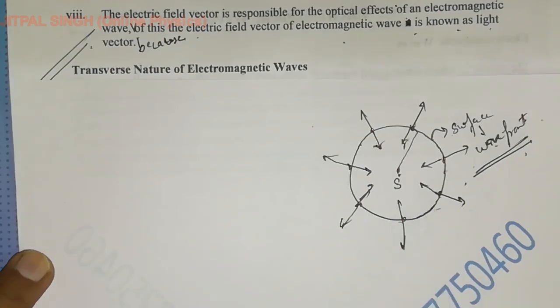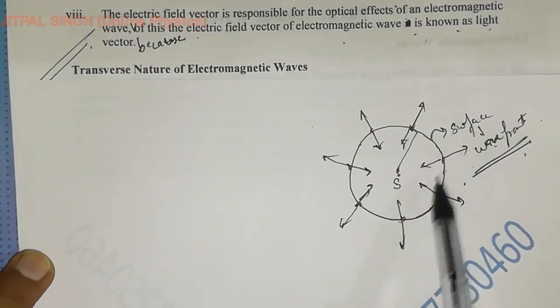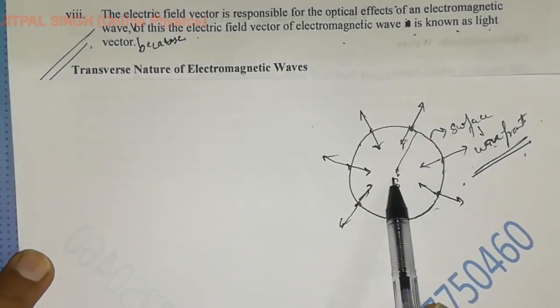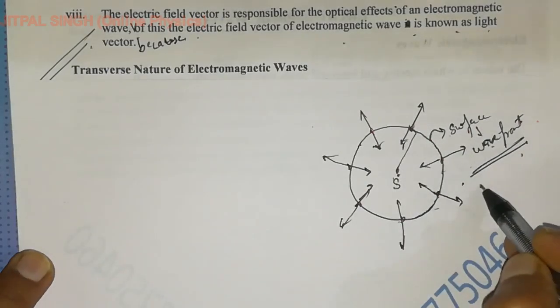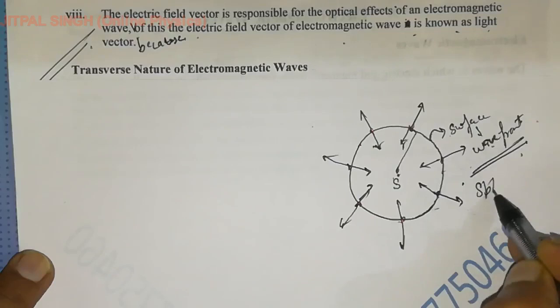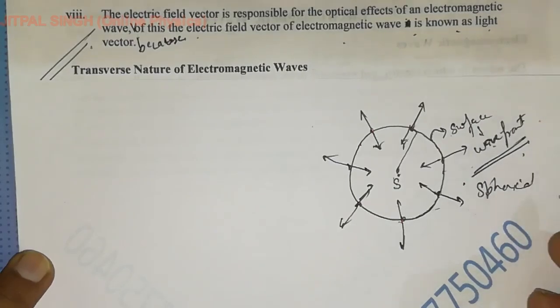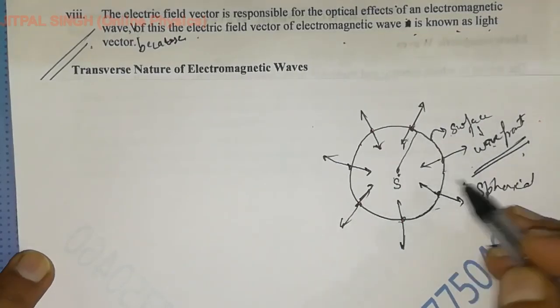Please do not forget this. For a point source, we have a spherical wave front — spherical shape.